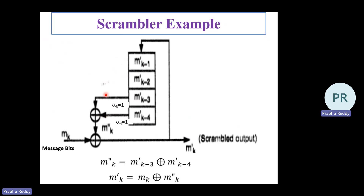From an exam perspective, either the diagram or the function will be given. The function tells us what the output mk-double-dash will be: mk-double-dash equals mk-minus-3-dash XOR mk-minus-4-dash. Given this definition, the diagram follows accordingly. The final scrambled output mk-dash equals mk XOR mk-double-dash.